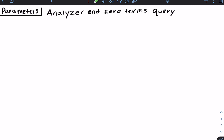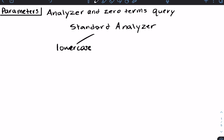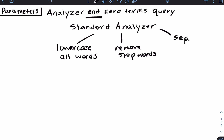What is the difference between the analyzer parameter and the zero terms query parameter? When we think about their relationship, it starts with the standard analyzer. What the standard analyzer does is it processes the provided text in your query to make it easier to search for. The first step is to lowercase all of your terms in your query string, then the next step is to remove all of the stop words — those common words that wouldn't add much value to the search. Lastly, the analyzer separates each of those terms into their own tokens.